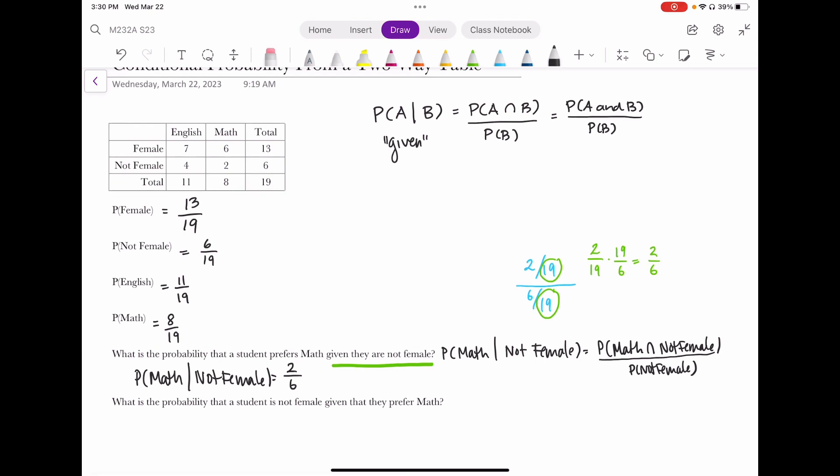What is the probability that a student is not female given that they prefer math? Well, that looks like it's the same question, but it's not. I have a different condition. I'm saying they have to prefer math first. So where are those that prefer math? They're in this column. These are the people who prefer math. And there are eight of them total.